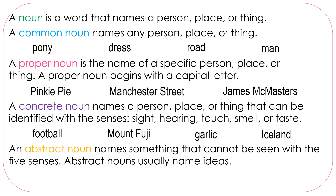An abstract noun names something that cannot be seen with the five senses. Abstract nouns usually name ideas. Examples include: love, honesty, luck, sadness. Those are things that we feel emotionally, but we can't feel them with our senses.